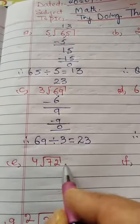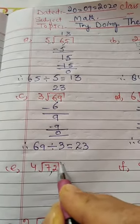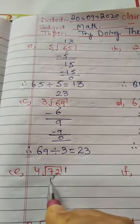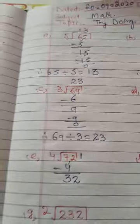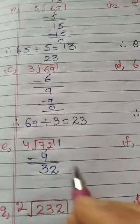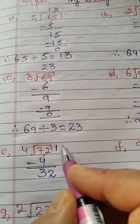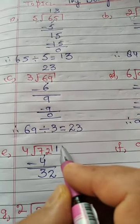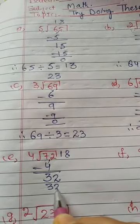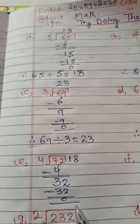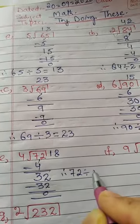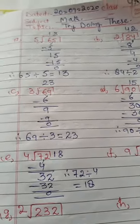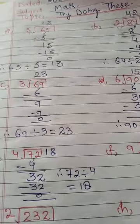4 divides 72. 4 ones are 4, 4 twos are 8. 7 minus 4 is 3. 32: 4 eights are 32, 32 minus 32 is 0. Therefore 72 divided by 4 equals 18.